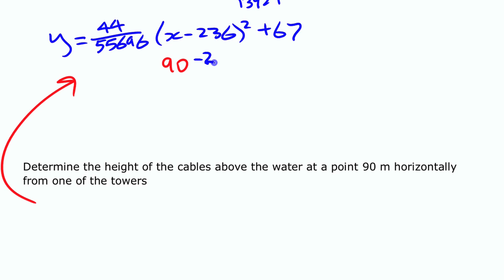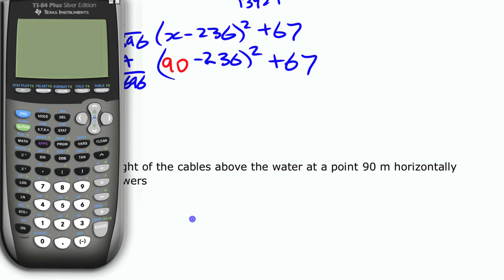If I put in 90 there, (90 - 236), all of that squared, times 44, divided by 55,696, and then add 67—that is going to give me my y value, my approximate height. So for this, I'm going to get that calculator out again.